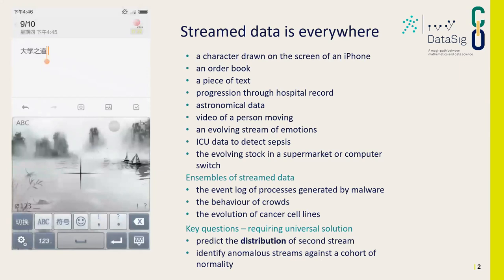There are a huge number of interesting examples of stream data, but there are also other situations. Quite often you don't have one stream of data — you have ensembles of streams of data. You might have many individuals moving, or you have a huge collection of sentences from the English language and so on.